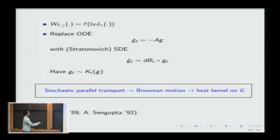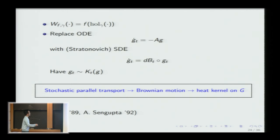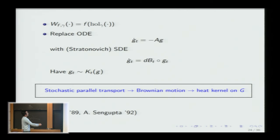A Wilson loop is a class function of the holonomy, and the holonomy satisfies an ordinary differential equation. If A is now a random variable (white noise), I replace the ODE with a stochastic differential equation in the sense of Stratonovich. The theory of SDEs is subtle, and the Stratonovich convention is the relevant one here. With this convention, the holonomy is distributed as Brownian motion on G, and Brownian motion is distributed as the heat kernel on G — another way to see why the heat kernel arises.